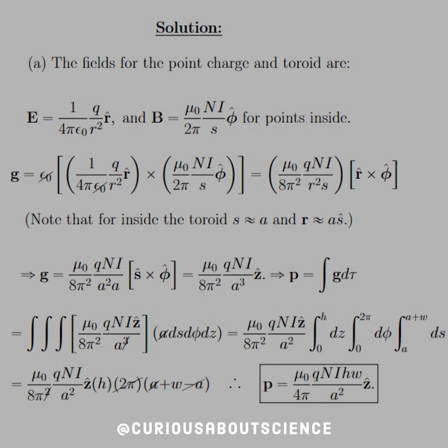And then we see that we have R cross phi. We'll go ahead and leave that alone for now. Now, the note here that W and H are much less than A allows us to avoid field variations. So this tells us that we can approximate S as A since the other two are so much less. And this tells us that the R vector is equal to A S hat.